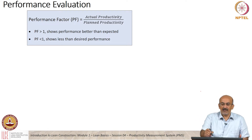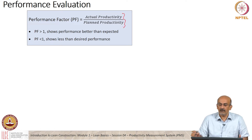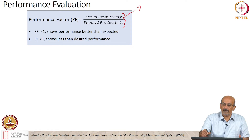We are taking actual productivity divided by plant productivity as a productivity performance. So this is the productivity performance factor.